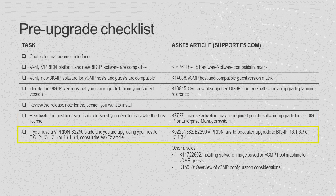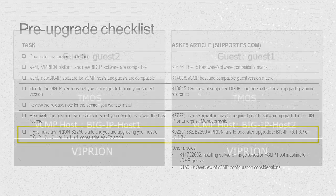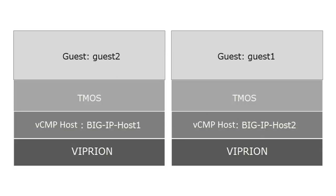Consult the article if you have a Viprian B2250 blade and you are upgrading your host to BigIP 13.1.3.3 or 13.1.3.4. Note that this only applies to hosts and not guests. In this demonstration, BigIP Host 1 and BigIP Host 2 are Viprians configured as VCMP hosts. They are both standalone devices in active state, not in a device group nor running in active-standby mode. With VCMP provisioned, they do not run application traffic. BigIP Host 1 has guest 2 running on it, and BigIP Host 2 has guest 1 running on it. The guests are in a device group and load balance and process application traffic.